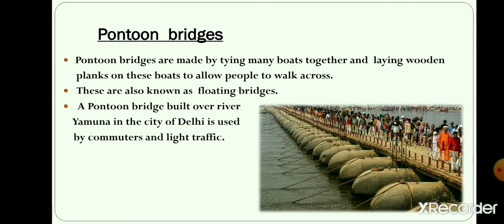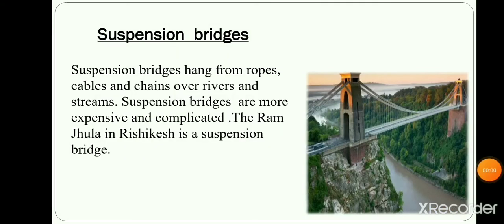Pontoon bridges are made upon many boats that are tied together. These can be rubber boats or single wooden boats. Pontoon bridges are also known as floating bridges. They are temporary and built during times of war and calamities. A pontoon bridge built over river Yamuna in the city of Delhi is used by commuters and light traffic.